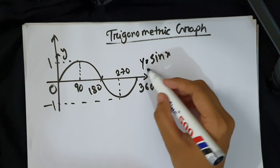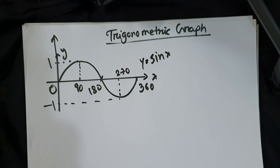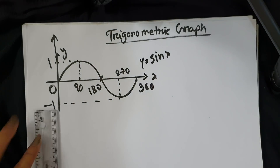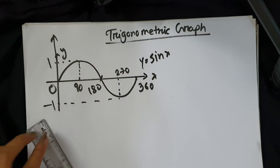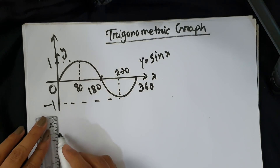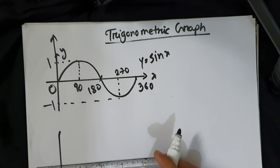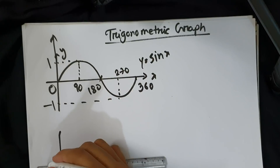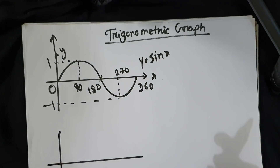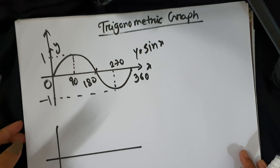The minimum y-coordinate of sin x is minus 1. So sin x is the basic graph where y equals sin x, going from 0 to 360 degrees. Next is the basic cos x graph.